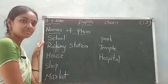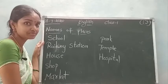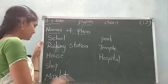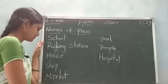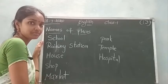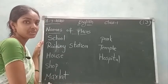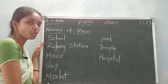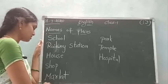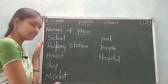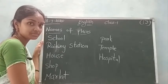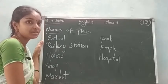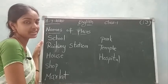House — do you like your house? Next: shop — do you go to a shop? Why do we go to shop? To buy our home needs. Next: market — did you go to the market? Why do we go to market? To buy vegetables, groceries, etc.